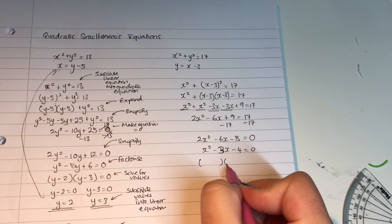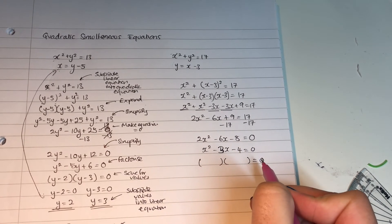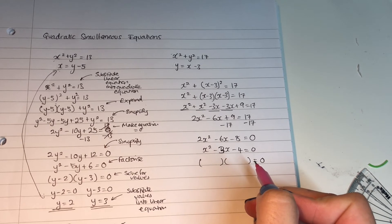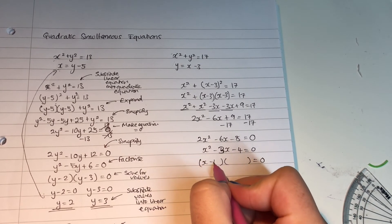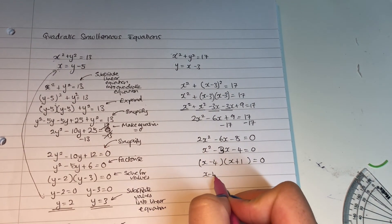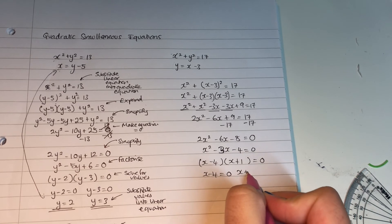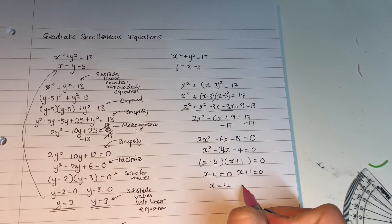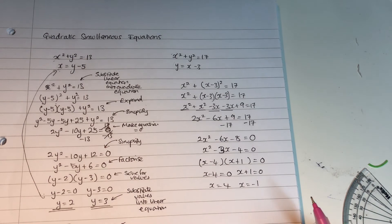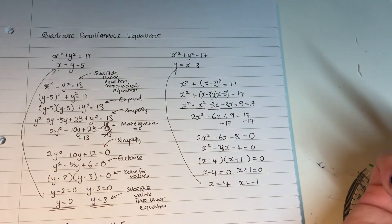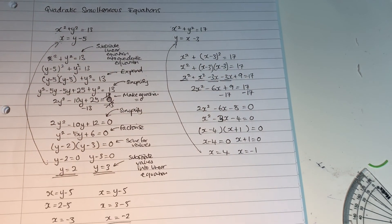Now I can factorize into two brackets. Two numbers that multiply to give −4 and add to give −3 are −4 and +1. So I get (x − 4)(x + 1) = 0. x − 4 = 0 gives x = 4, and x + 1 = 0 gives x = −1. Now I've got my x values and I can substitute them into my linear equation to work out my y values.